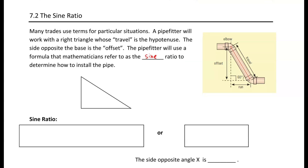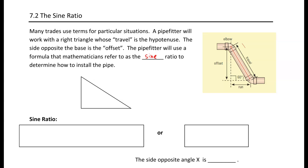Now many trades use this particular situation. For example, on the right here we have a pipe fitter, and they're looking at figuring out what that distance is. They have to calculate for that distance, which in this case is the hypotenuse. They use this sine ratio to calculate based off of the angles that they know — they know they have an angle of 60 degrees. They may know their offset, so the height they have to bring it up, and they want to figure out their hypotenuse so they can calculate the length to cut that pipe at. We're going to dive into examples like that today.